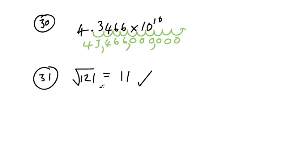121 is a perfect square. And it's 11 times 11. So our answer is 11. Okay. Hope this helps.